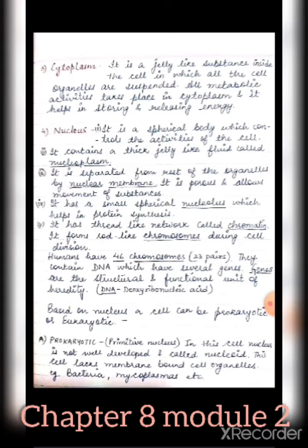Fourth is nucleus. It is a spherical body which controls the activities of the cell, so it is mainly known as the brain of the cell — just as the brain controls our body, the nucleus controls the cell. It contains a thick jelly-like fluid called nucleoplasm.